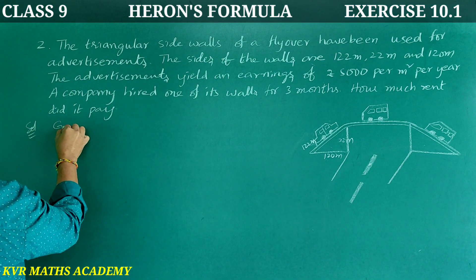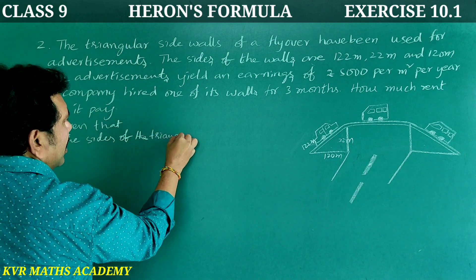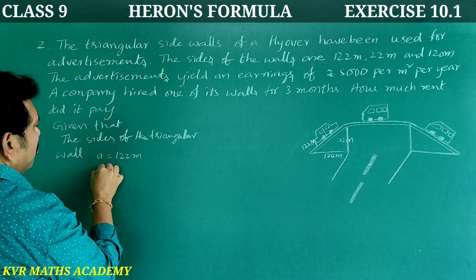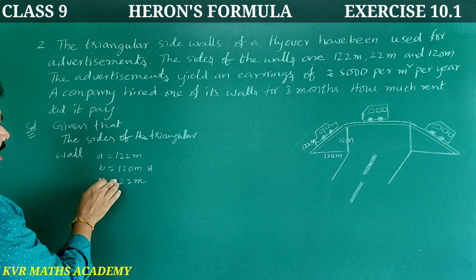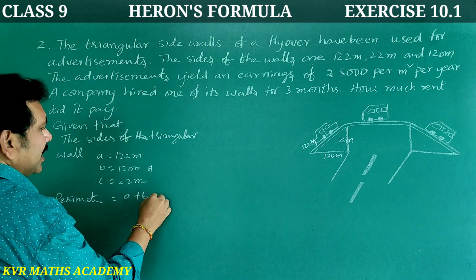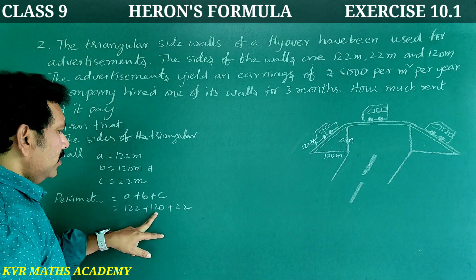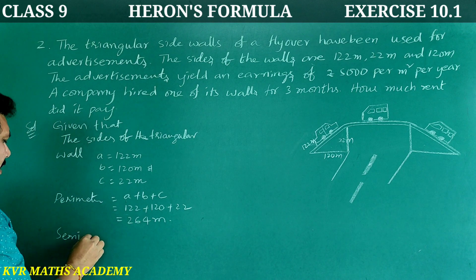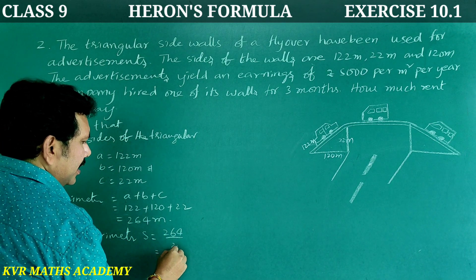Solution. Given: sides of the triangular wall are A equals 122 meters, B equals 120 meters, and C equals 22 meters. Perimeter equals A plus B plus C equals 122 plus 120 plus 22 equals 264 meters. Semi-perimeter S equals 264 divided by 2 equals 132 meters.